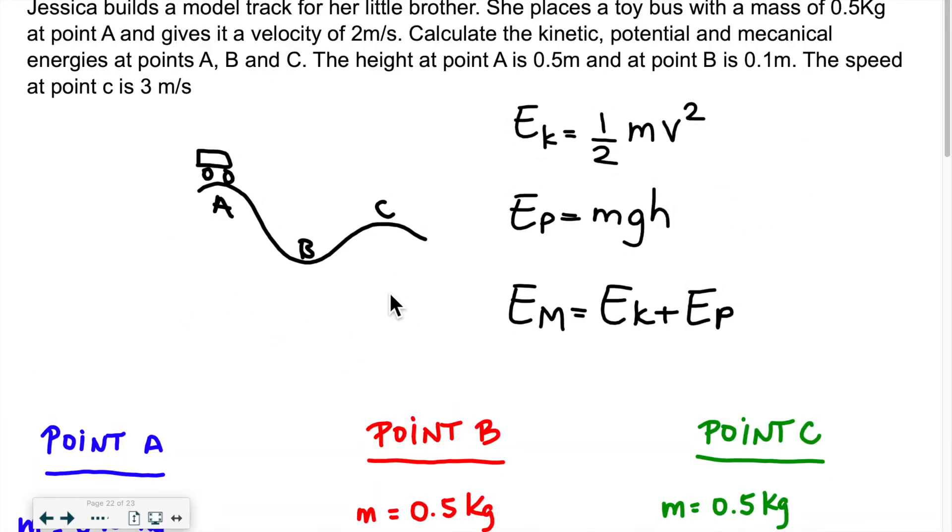So let's take a look at the following question. Jessica builds a model track for her little brother. She places a toy bus with a mass of 0.5 kilogram at point A and gives it a velocity of 2 meters per second. Calculate the kinetic, potential, and mechanical energies at points A, B, and C. The height at point A is 0.5 meters and at point B is 0.1 meter. The speed at point C is 3 meters per second. So for all three points, you need to find the mechanical, the kinetic, and the potential energies.